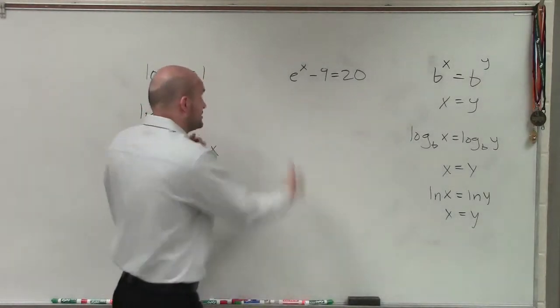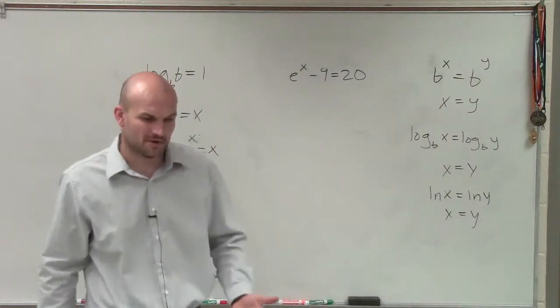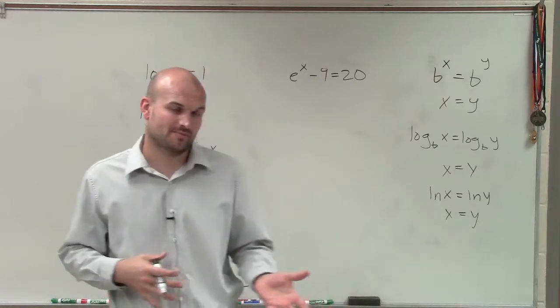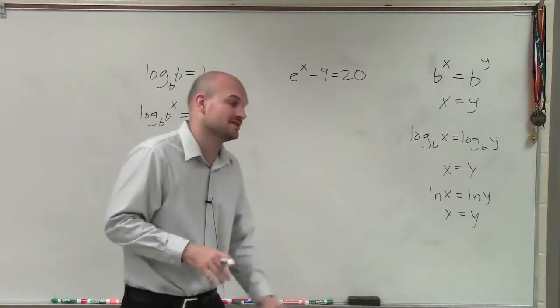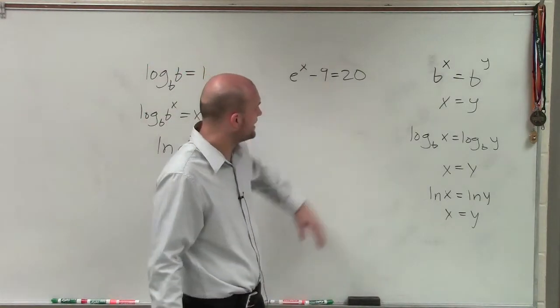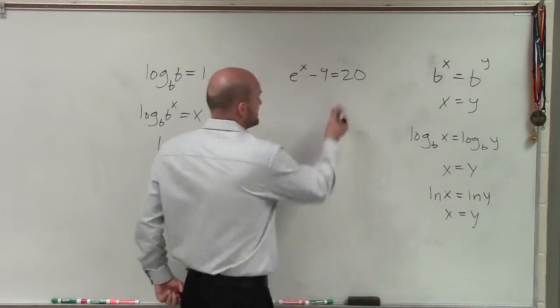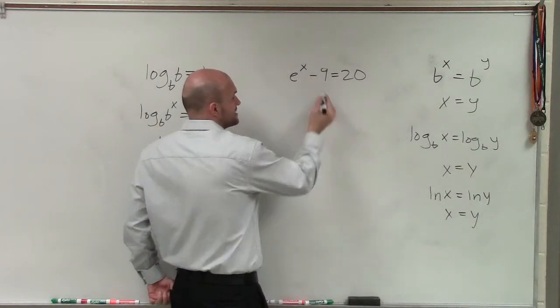In this example, I have e to the x minus 9. Before, we've used one-to-one properties, and I'm going to go a little different direction in this case. But rather than using my one-to-one properties, even if I was going to apply them, I need to make sure I isolate my exponential.